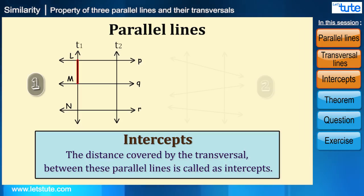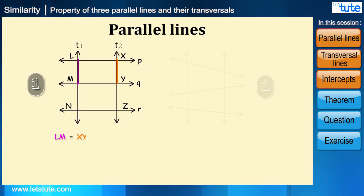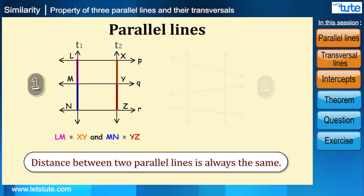Like here, LM and MN are intercepts on transversal t1, and XY and YZ are intercepts on transversal t2. So here if you will see carefully, LM equal to XY and MN equal to YZ. Can you think why this is correct? Yes, distance between two parallel lines is always same. Hence LM equal to XY and MN equal to YZ.